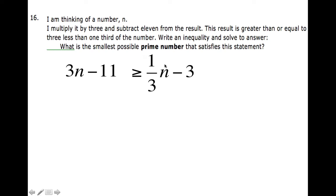Alright, there's the inequality. Let's take a look again. Multiply the number by 3, subtract 11. This result is greater than or equal to 3 less than 1/3 of the number.